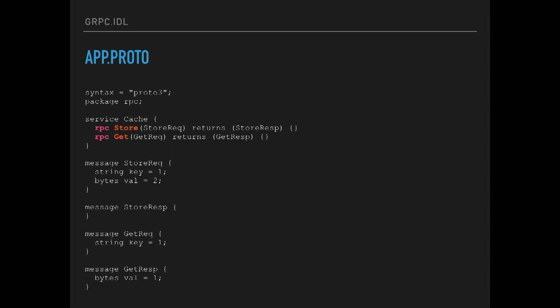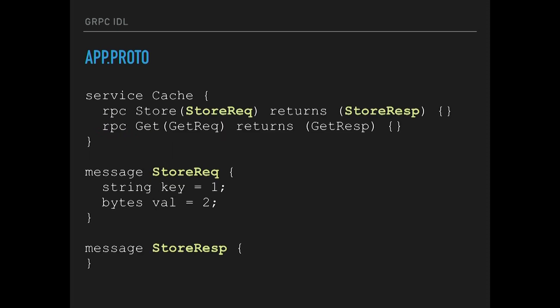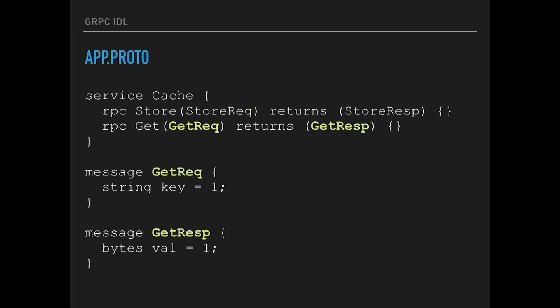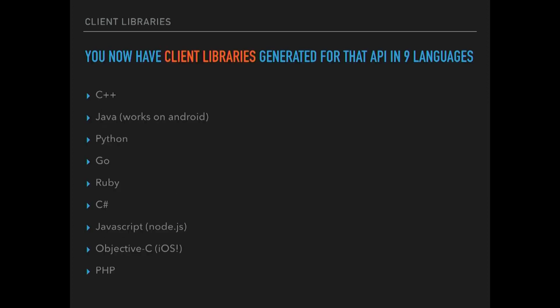This is our caching service. We define a cache service with two calls: store and get. Every single gRPC function takes a single parameter as input and a single parameter as output. The way you pass multiple values in and out is you add those as fields on the messages. The store request has the key and value to put into the cache; the get method has the key in the get request, and the response has the value it returns.